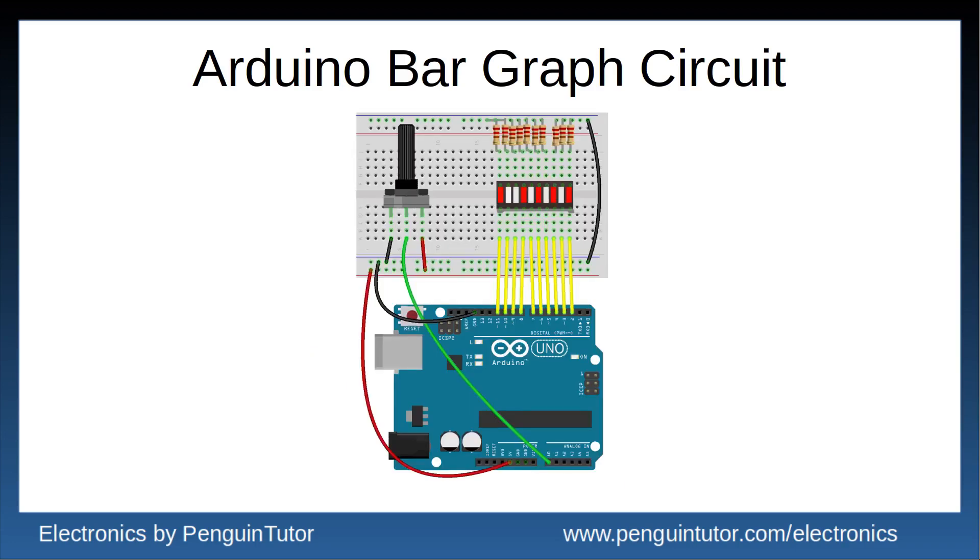Here is the breadboard layout, shown as a Fritzing diagram. One change is that for the bar graph, I have shown individual resistors on this diagram, whereas I use the resistor network on the actual circuit, just to reduce the number of components. It would work the same using either type.